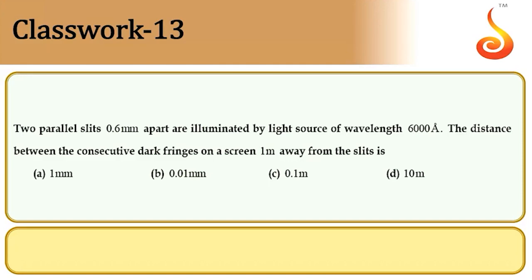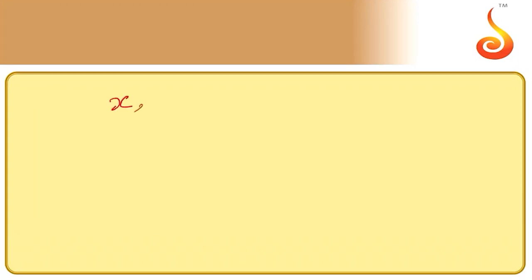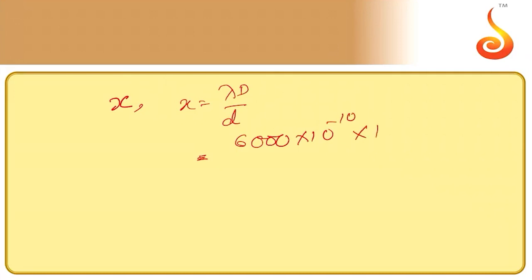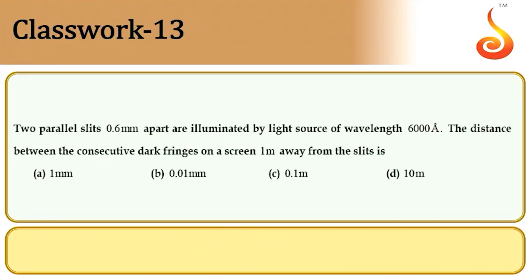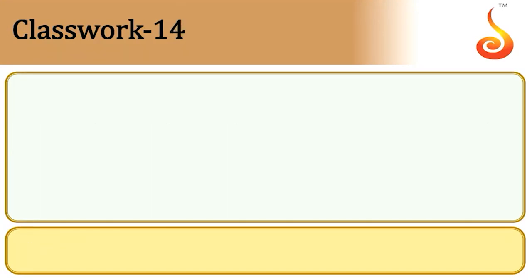Example 13: Two parallel slits 0.6 mm apart are illuminated by wavelength 6000 Å. Distance between consecutive dark fringes = lambda·D/d = 6000×10⁻¹⁰ × 1 / (0.6×10⁻³) = 1×10⁻³ m = 1 mm.